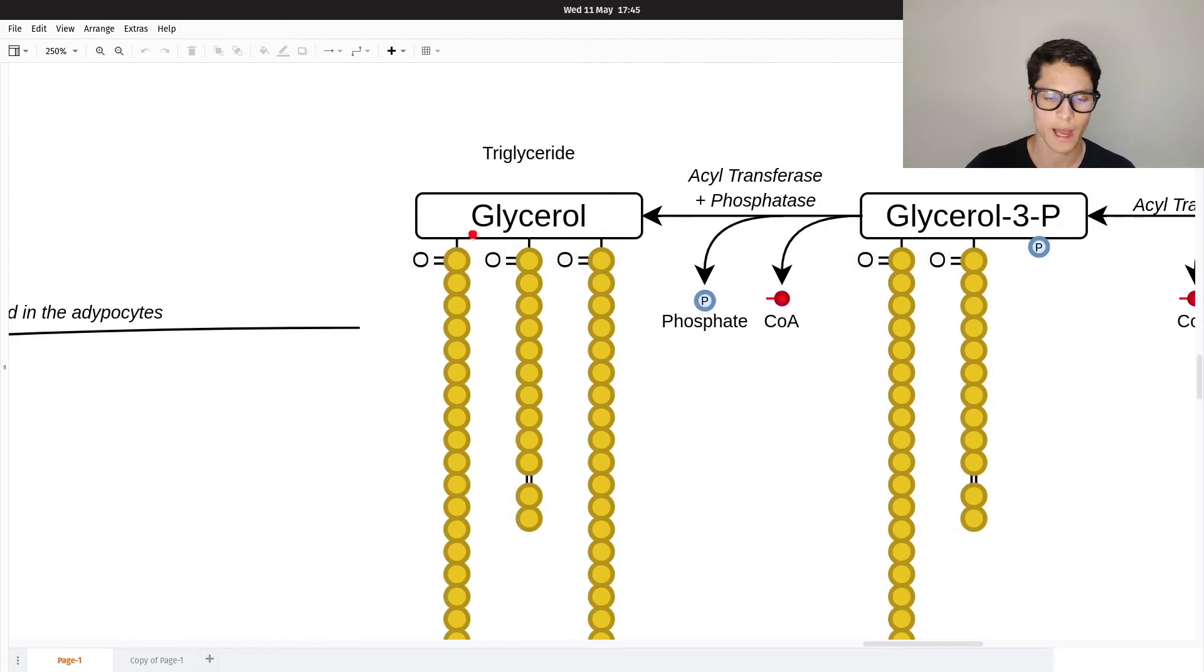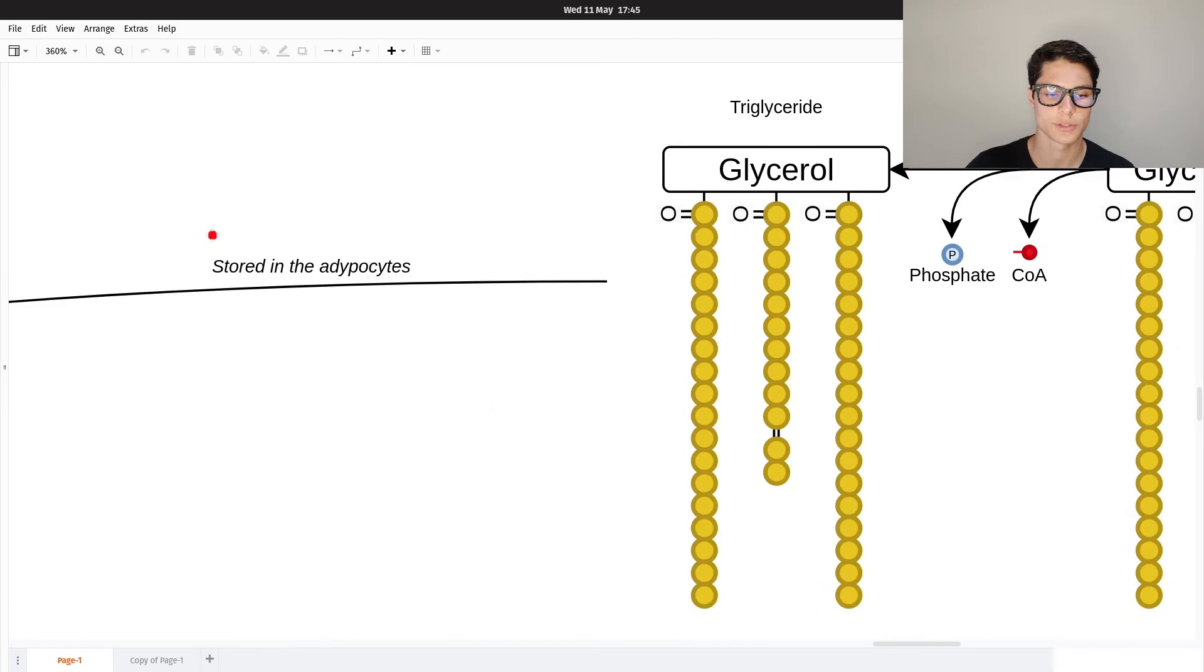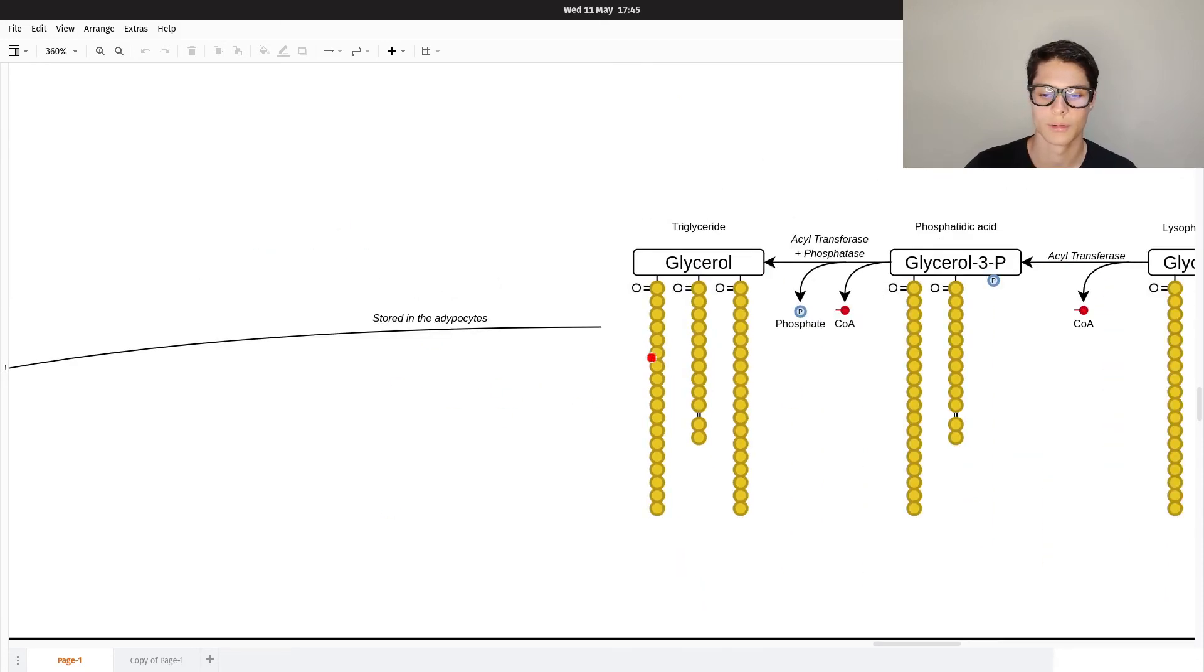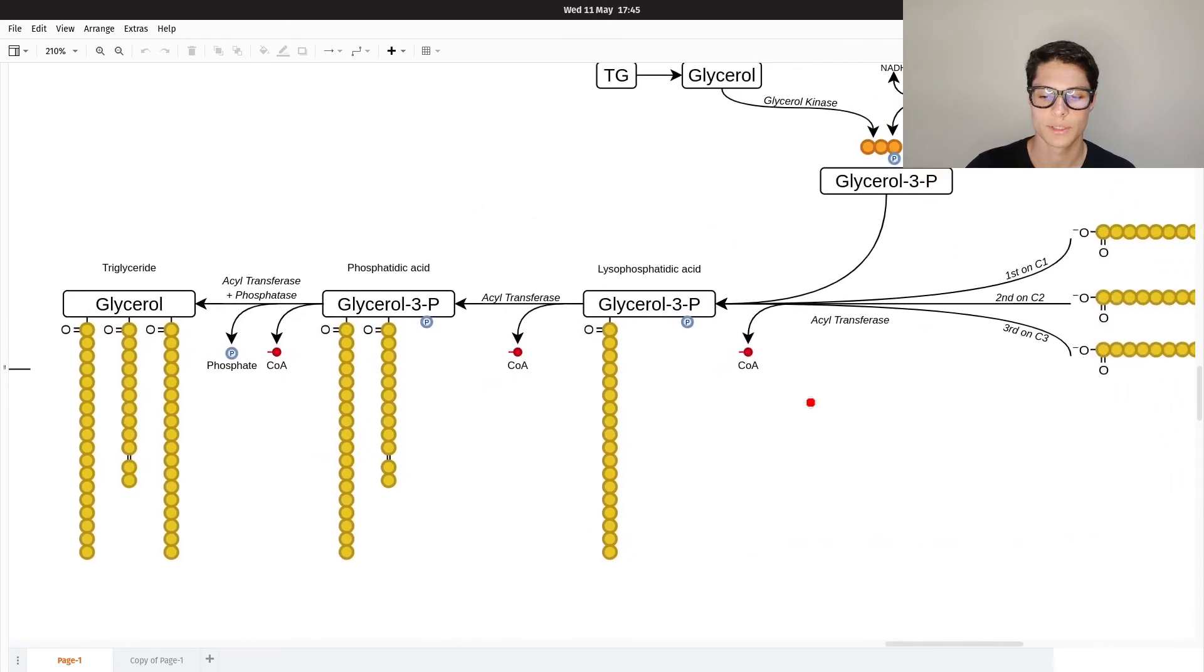Okay, once we have the triglyceride, they're going to go to the adipocytes. We're going to store the triglycerides into the adipocytes outside of this cell.